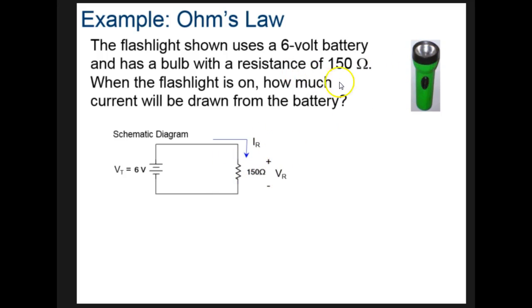And then we have current flowing through the circuit, but we don't know how much current there is. Here's the formula for Ohm's law: V equals IR. And in this case, we're going to look for I.